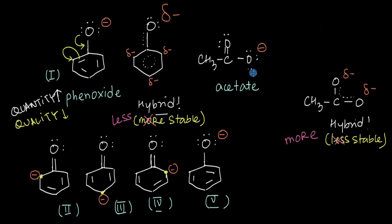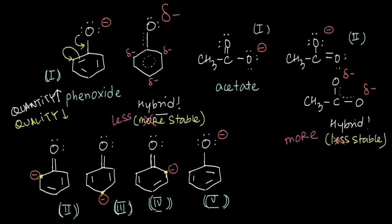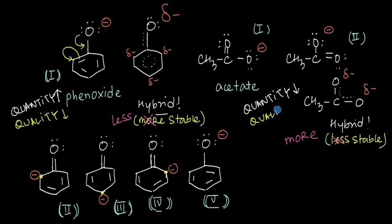On the other hand, if you look at the resonating structures of the acetate ion, both resonating structures are exactly identical in energy — in both, the negative charge is over an oxygen atom. So the quality of resonance is super high here, and the negative charge gets distributed evenly between both oxygen atoms. Even though the quantity of resonating structures is low in acetate, the quality of resonance is high, leading to equivalent resonating structures in energy, so this delocalization happens very effectively. Therefore, the reduction in charge density turns out to be much greater in acetate, making it much more stable than phenoxide.